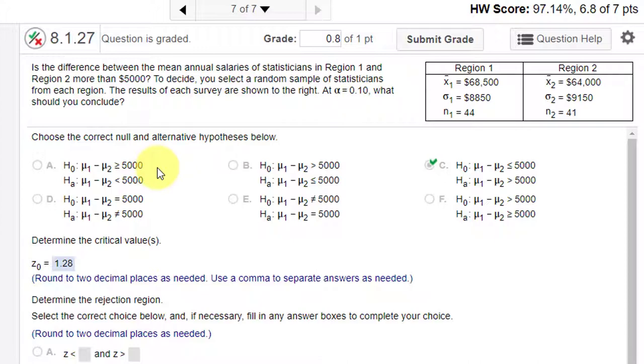First thing we need to do is set up the null and alternative. Here we've got a more than, which is a greater than symbol, which means the alternative is mu 1 minus mu 2, the difference is greater than 5,000. The null has to be the complement of that, which is less than or equal to 5,000. Because the wording here is, is it more, that tells me the claim has to be the alternative, because they're asking the question, is it greater than 5,000?